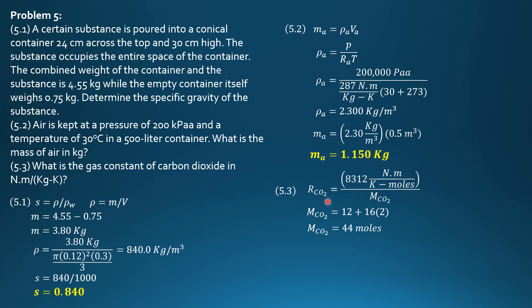Therefore, the gas constant of carbon dioxide is 8312 divided by 44. So it equals 188.9 Nm per kg kelvins.